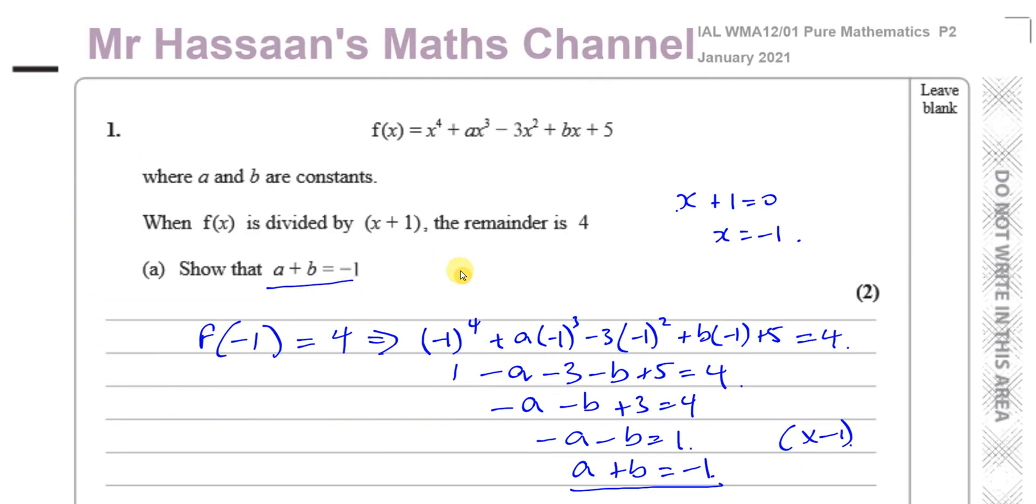And that's the end of question number one, part a and b, from this January 2021 paper. As I mentioned, other questions from this paper can be found in the playlist, which will be linked over here. And in that same playlist description, you will find the PDF of this paper. Other questions from this topic of the factor theorem can be found in the playlist that should appear over here.